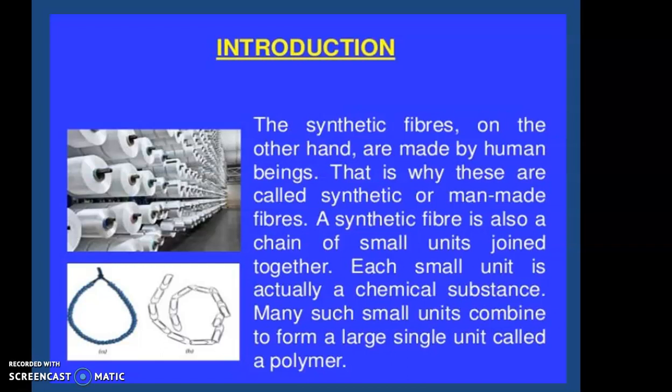The examples of synthetic fibers we are going to study in this chapter are rayon, nylon, polyester, and acrylic fiber. Each synthetic fiber is also a chain of small units joined together. Each small unit is actually a chemical substance, and many such small units combine to form a large single unit called a polymer, as shown in the picture of a necklace of beads and paper clips joined together.